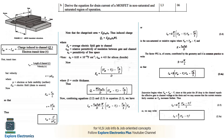In the non-saturation region, IDS depends on both VDS and VGS. In the saturation region, IDS = K·(W/L)·(VGS − VT)²/2, which is independent of VDS. These two expressions are what the question asks to derive, and this is a 6-mark question.